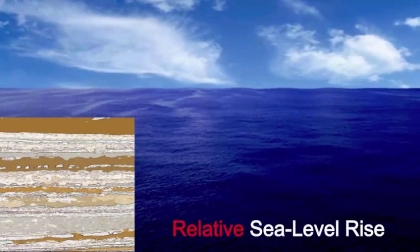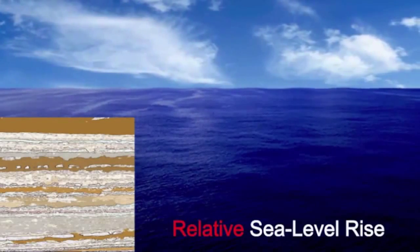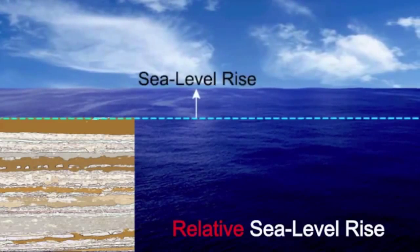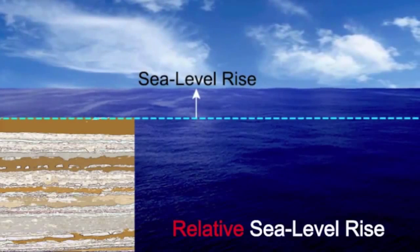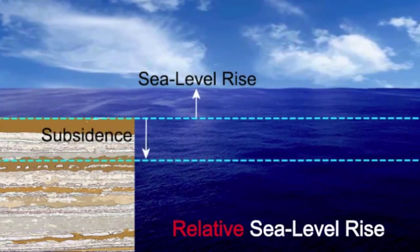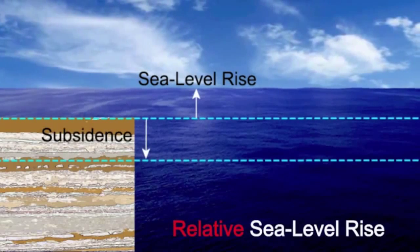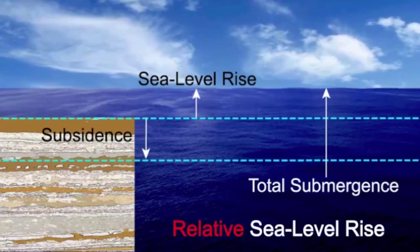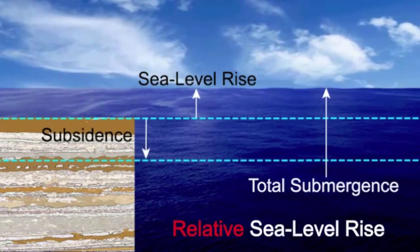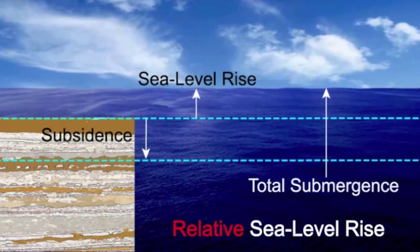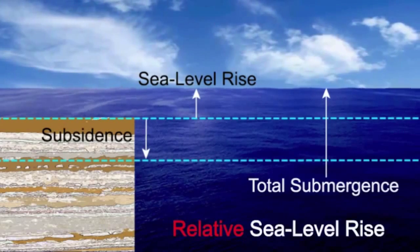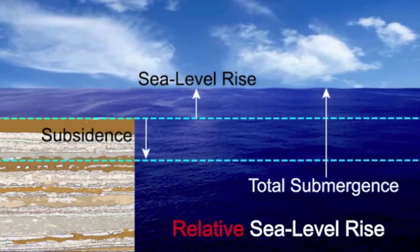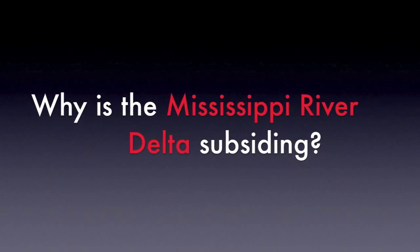Relative sea level rise is the combination of eustatic rise in sea level and land movement, and is unique for each location. The combination of the two processes determines the rate of submergence in each coastal area.